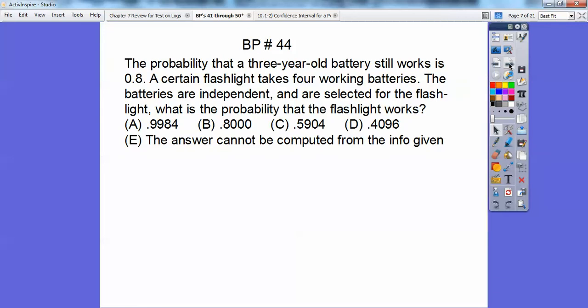The probability that a three-year-old battery still works is 0.8. A certain flashlight takes four working batteries. The batteries are independent and are selected for the flashlight. What's the probability that the flashlight works? Well, since each one has 0.8 of a chance and there's four of them, it's going to be 0.8 to the fourth. So that gets me choice D.